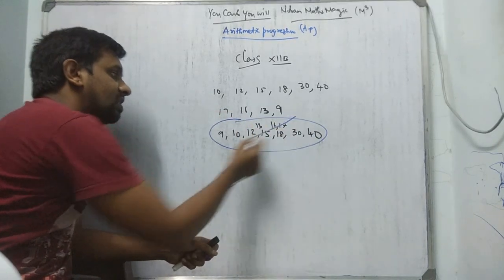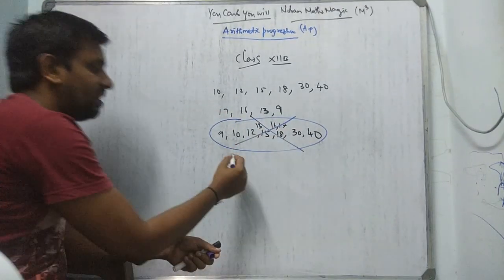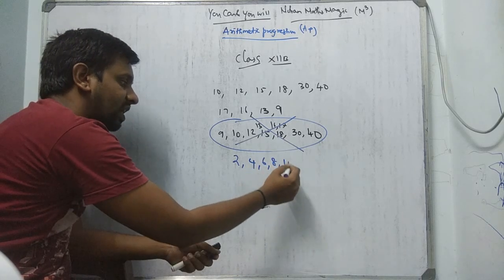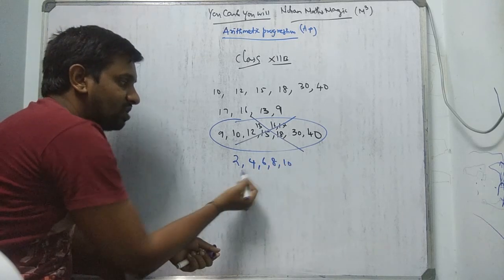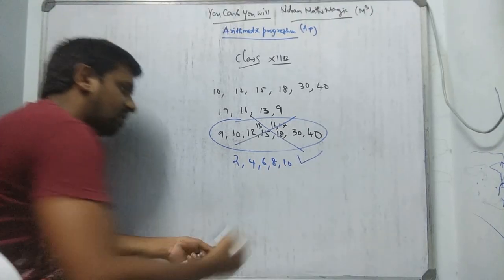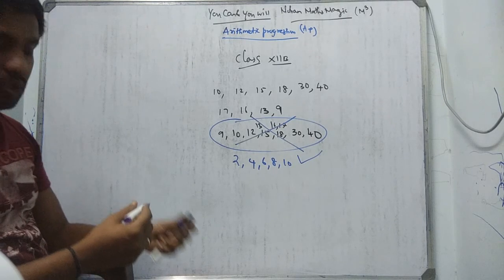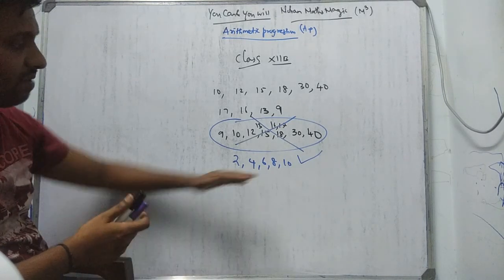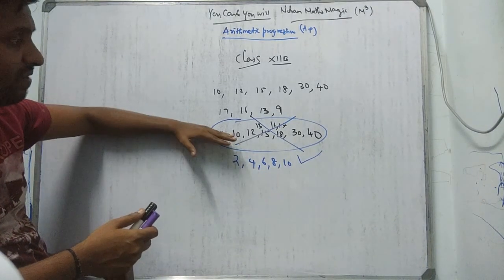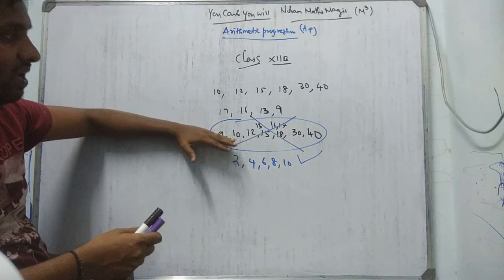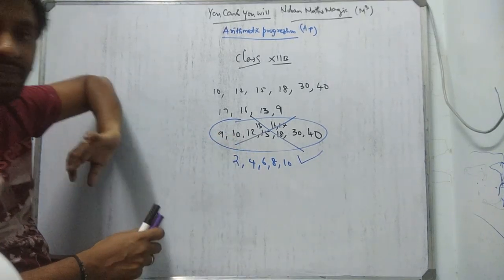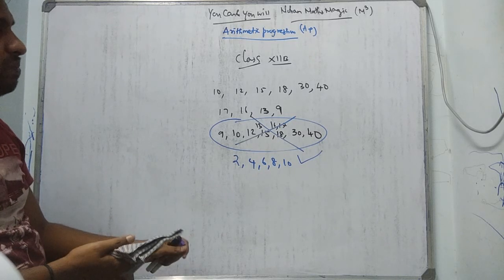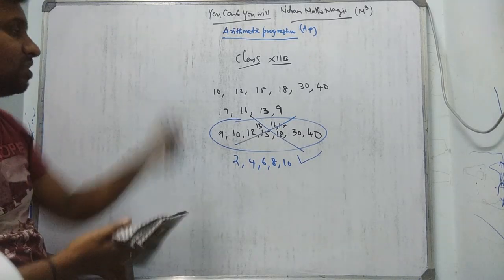This is said to be not an AP. But if the difference is same — like 2, 4, 6, 8, 10, where the difference is continuously 2 — this is said to be AP. You have to be very clear: if the differences are the same, that is AP; if the differences are not the same, that is not AP. The difference must be the same.